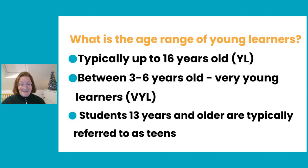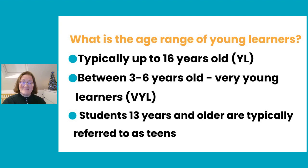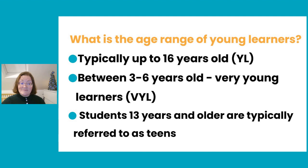We're going with up to 16 today. We also have a subcategory: very young learners, typically between the ages of three and six, who are their own category because teaching them is completely different from teaching seven-year-olds and up. When you're talking about students in their teens — once they hit 13 — they are still young learners but we tend to refer to them just as teens. Today we're mainly talking about genuine young learners, roughly ages seven to twelve.